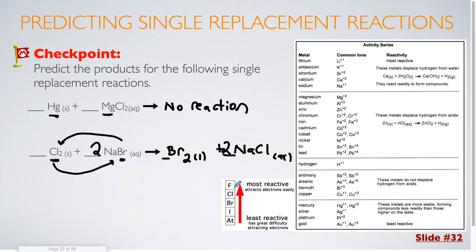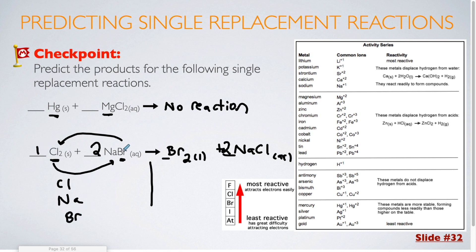This is already balanced. If you're still relatively inexperienced with balancing, you could always put the line down below and count up each of your atoms, just like we were doing in the balancing practice.